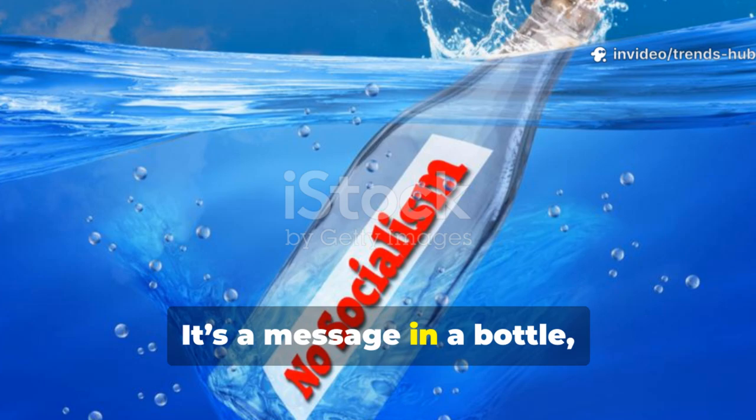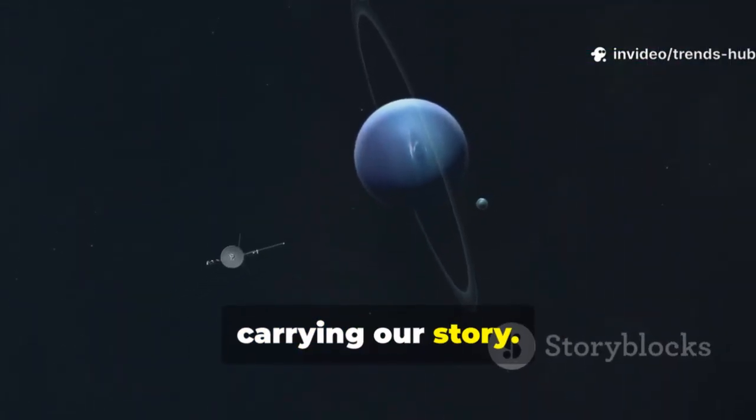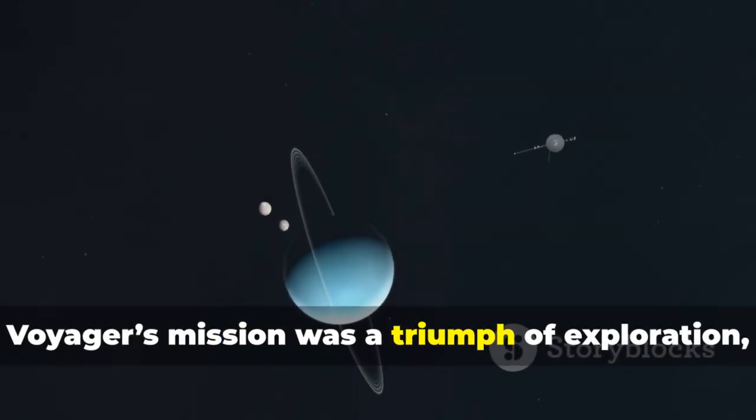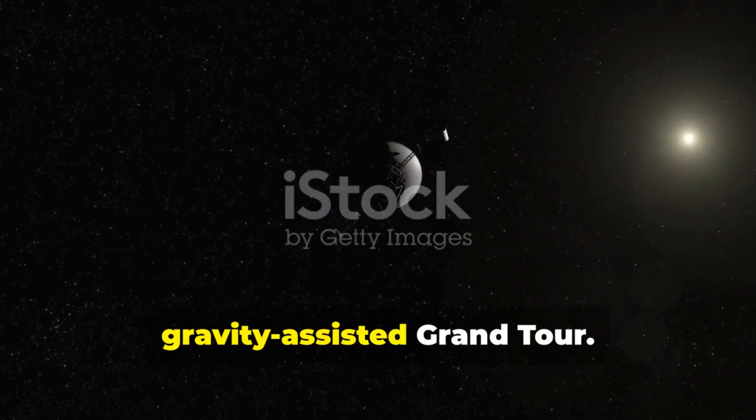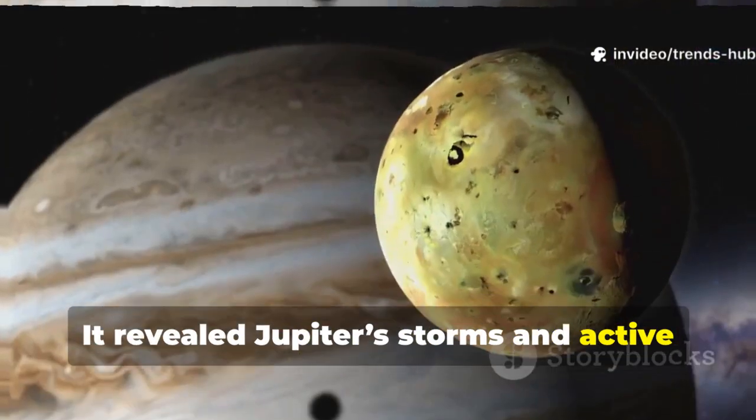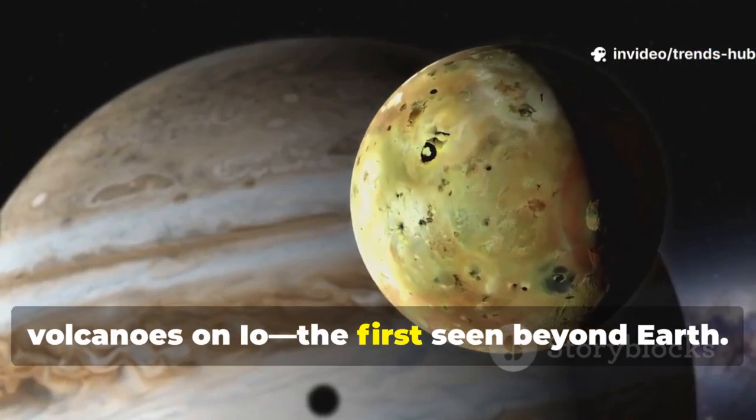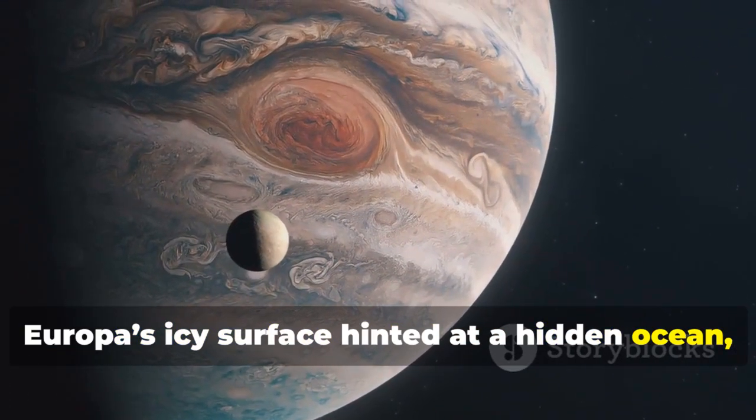The golden record transforms Voyager from a scientific instrument into a poetic statement about our existence. It's a message in a bottle, cast into the cosmic sea, and it's still out there, carrying our story. Voyager's mission was a triumph of exploration, using a rare planetary alignment for a gravity-assisted grand tour. It revealed Jupiter's storms and active volcanoes on Io, the first seen beyond Earth.